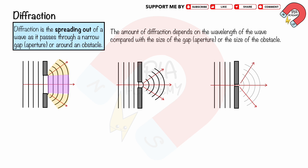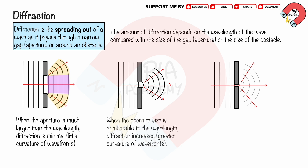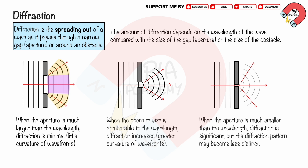We can conclude as follows: When the aperture is much larger than the wavelength, diffraction is minimal with little wave front curvature. When the aperture size is comparable to the wavelength, diffraction increases with greater curvature of wave fronts. When the aperture is much smaller than the wavelength, diffraction is significant, but the diffraction pattern may become less distinct.